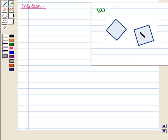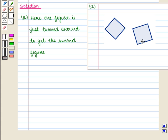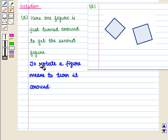Let us look at the first figure. Here neither one figure slides to get the second figure nor are these the mirror images of each other. Here we see that one figure is just turned around to get the second figure and we know that to rotate a figure means to turn it around.